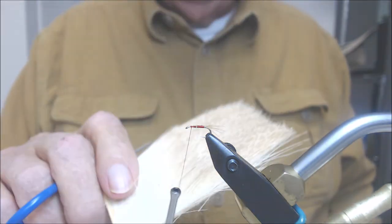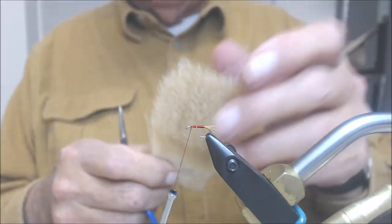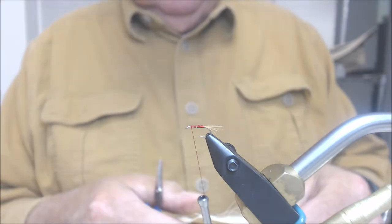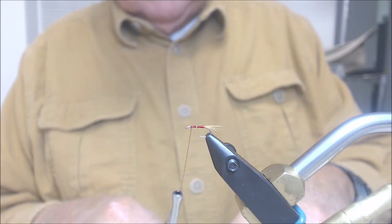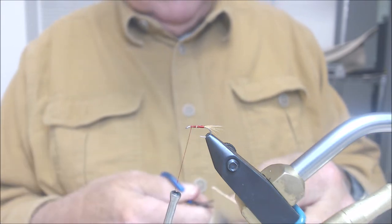For the back of the carapace, we're going to use some bleached deer hair. This is coastal deer hair, which is really pretty good. You only need about 8-10 fibers of this for the carapace. So I'm going to cut more than that off, cut a hunk about like that.